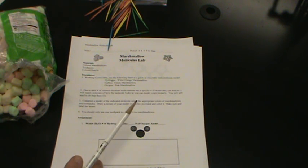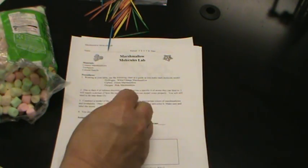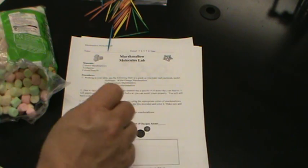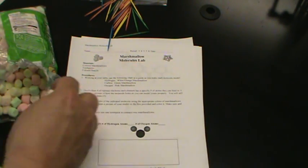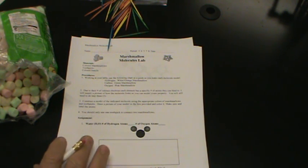Basically what we're doing here is we are using marshmallows to represent different atoms. In this case yellow marshmallows will be hydrogen, pink marshmallows will be oxygen, and green marshmallows will be carbon. We're going to use toothpicks to arrange them in different configurations to represent different molecules. And this is designed for a sixth grade class, so we're keeping it very simple.